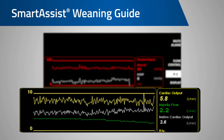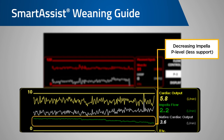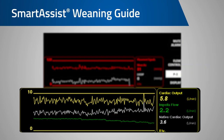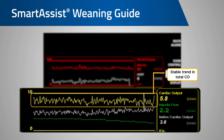Now let's move down to the cardiac output portion of the trend screen. When a reference cardiac output is entered, the automated Impella controller can determine the portion of the cardiac output being provided by Impella and the native heart. As the P levels, shown in green, are decreased, you want to observe an increasing trend in the native cardiac output shown here in white. Additionally, you want to observe that the total cardiac output, shown here in yellow, remains stable.